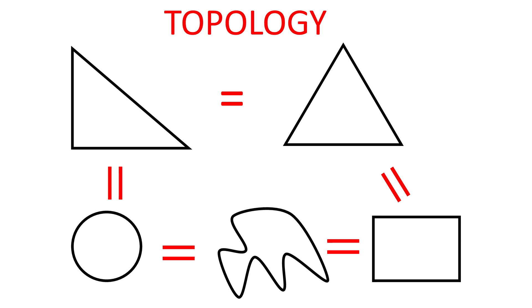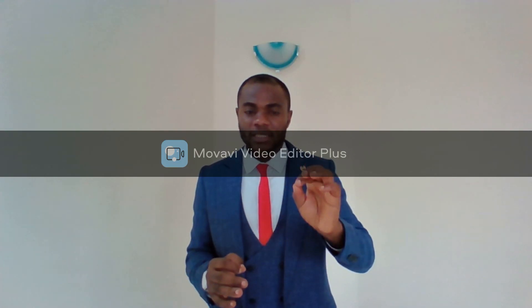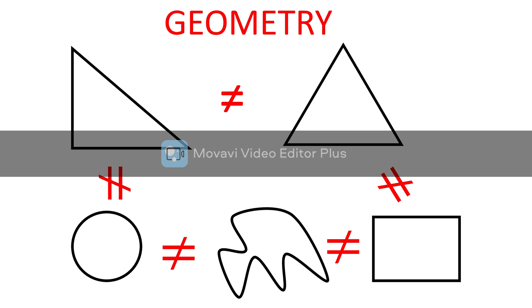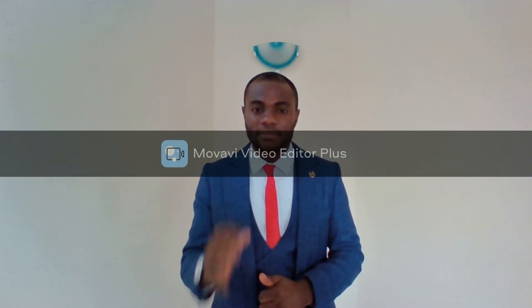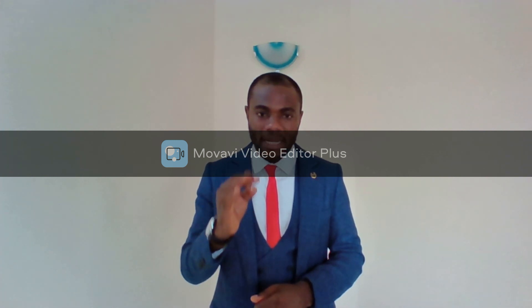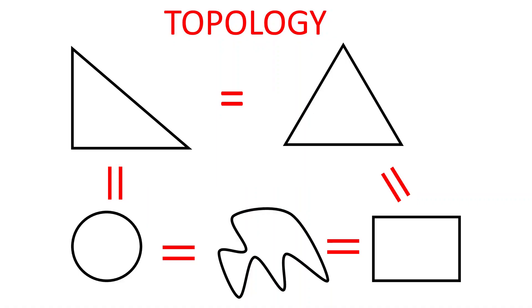In topology, all these figures are the same, but when we are dealing with ordinary geometry, all these shapes are different. As long as the topological properties are the same, the objects are considered the same — no matter what they look like.